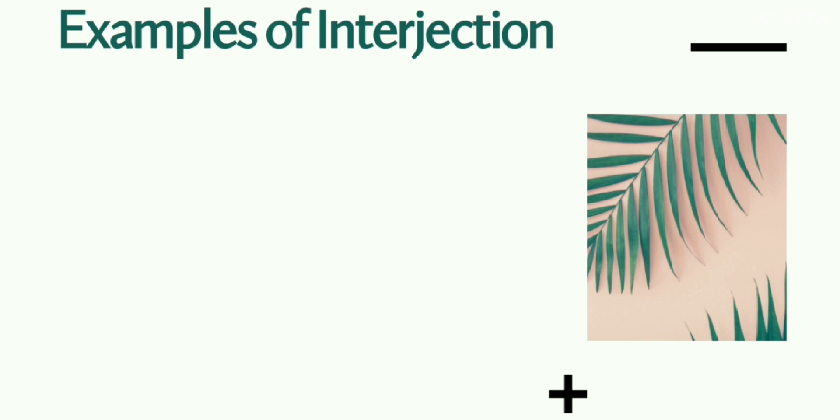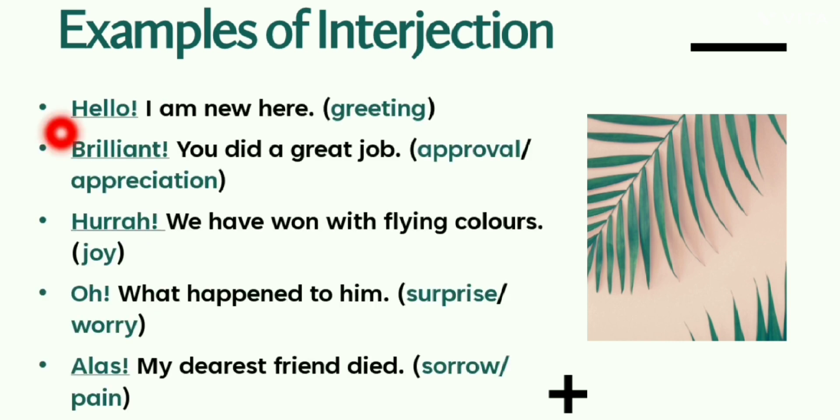To have a clear idea of interjections, let's understand with the help of some examples. Hello! I am new here. Over here, hello interjection is just showing greeting. Brilliant! You did a great job. Brilliant interjection is showing over here approval or appreciation. Number three: Hurrah! We have won with flying colors. Hurrah interjection is showing joy over here.